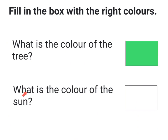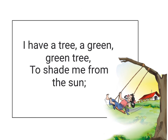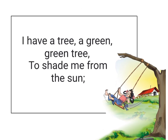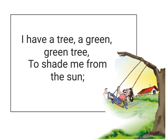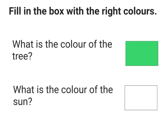The next question is: what is the color of the sun? To answer this question, I will go back to the poem, but the answer is not given there. So I will look at the picture, and in the picture I see the color of the sun is yellow. So I will color the box with yellow.